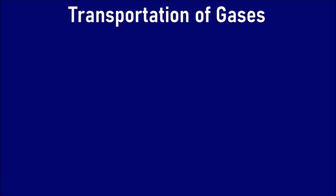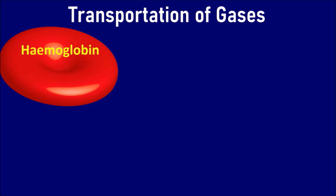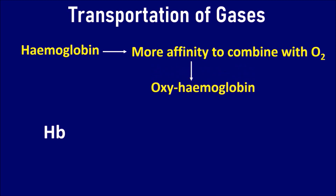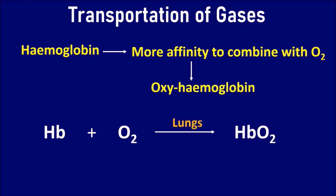Transportation of Gases. Hemoglobin is the pigment that helps in transportation of gases. It exists in the red blood cells. It has more affinity to combine with oxygen to form oxyhemoglobin, which is transported to all parts of the body through the bloodstream. It is represented as: Hb + O2 gives rise to HbO2, i.e., oxyhemoglobin. This takes place at lungs level.